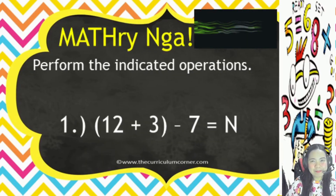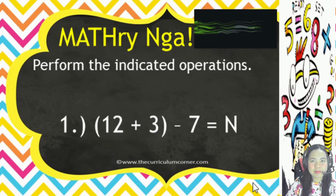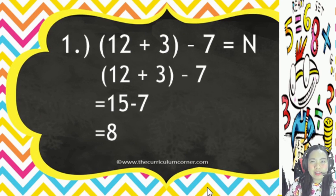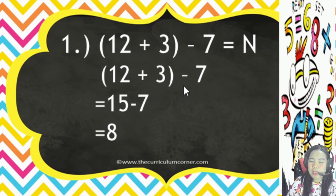Let's try! Perform the indicated operations. Number 1: we solve inside the parentheses first. 12 plus 3 equals 15, then minus 7. The answer is 8.